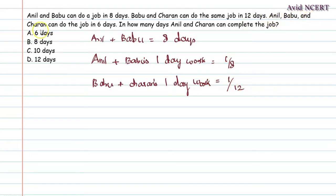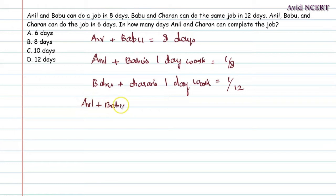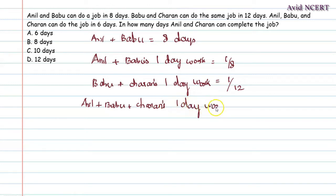From the third sentence, Anil, Babu and Charan can do the job in 6 days. Therefore, Anil plus Babu plus Charan's 1-day work equals 1/6.